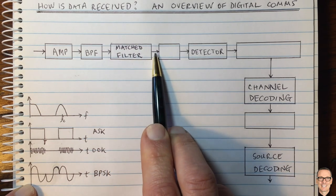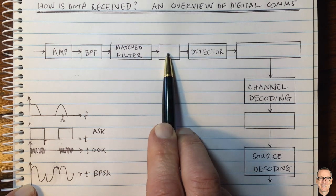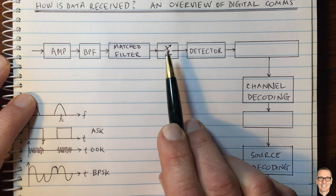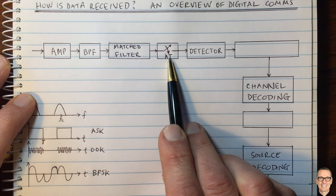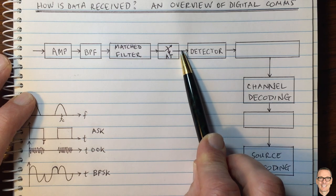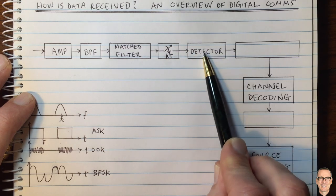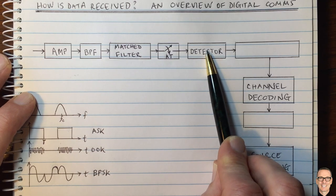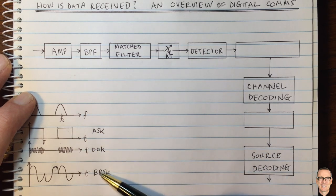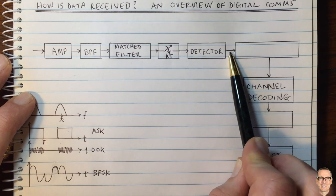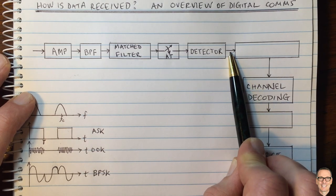At the output of our matched filter, we do a time sample at multiples of the symbol period capital T. The output from those samples goes into a detector which maps those samples back to the constellation—whether it was a one or a zero. The output from the detector is the binary ones and zeros.